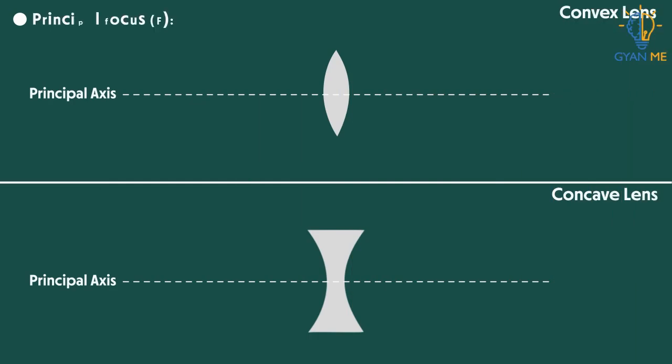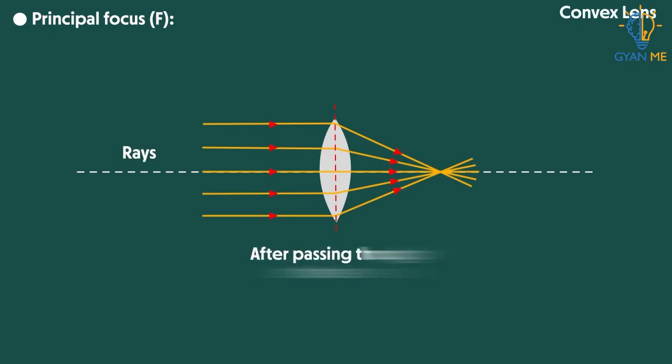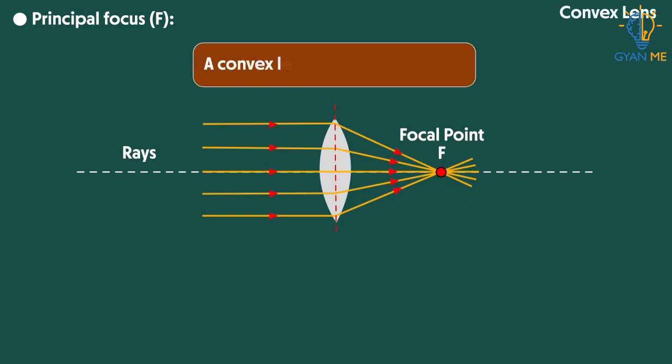The next term is principal focus F. Let us now draw some additional parallel rays to this principle. Observe that these rays, after passing through the lens, bend in such a way that they meet at a single point on the other side of the lens. This point is called focus point. Now think why is this happening? This is because we know that convex lens is a converging lens.